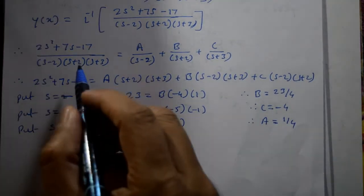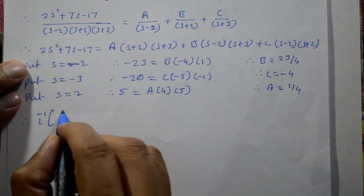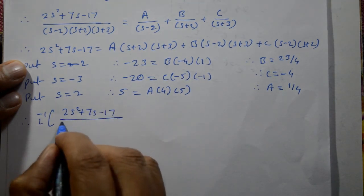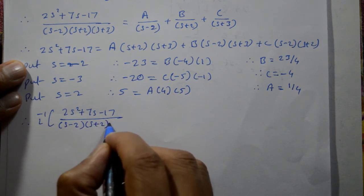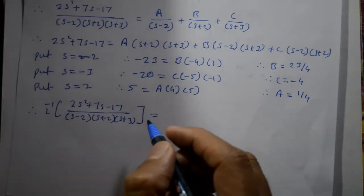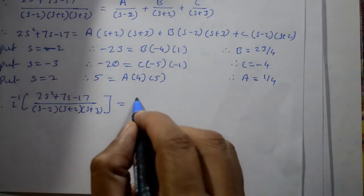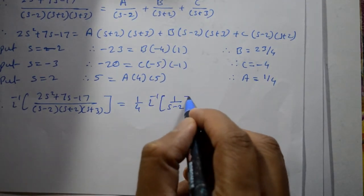That means inverse of this is equal to inverse of 2s square plus 7s minus 17 divided by s minus 2 into s plus 2 into s plus 3. That is equal to inverse Laplace, a value, a is 1 by 4, so 1 by 4 inverse of 1 by s minus 2.